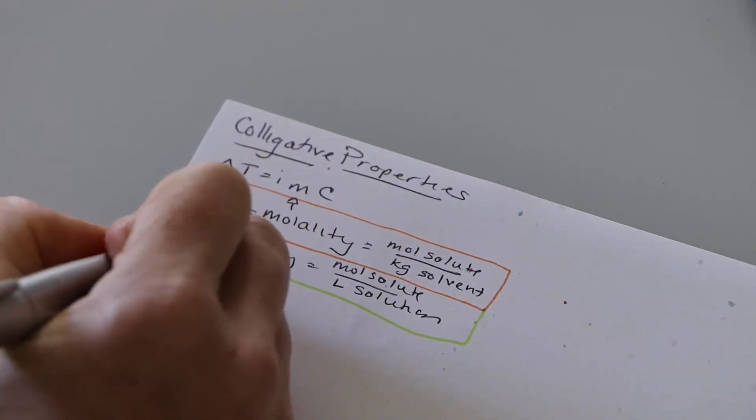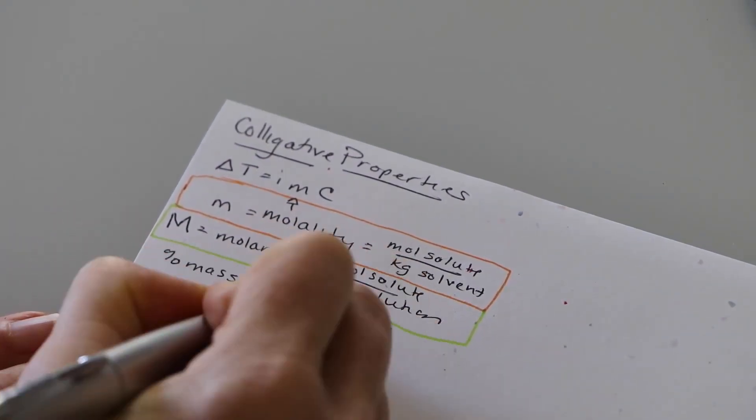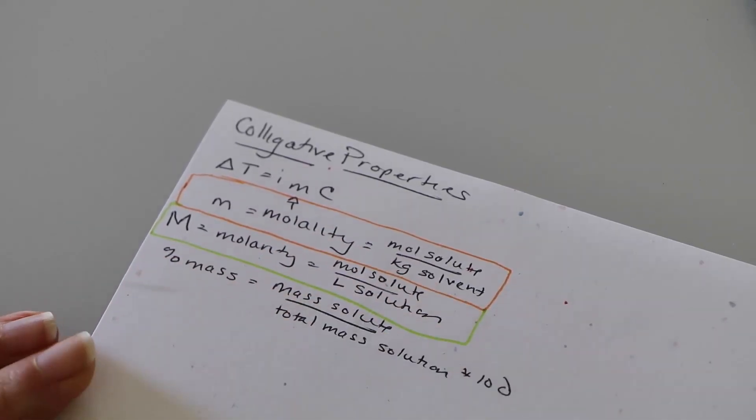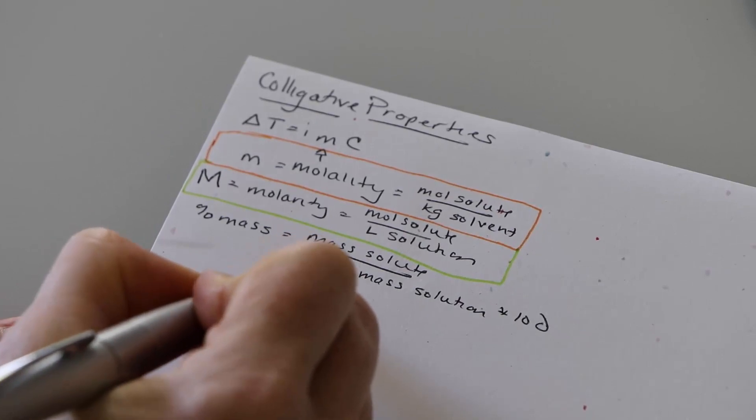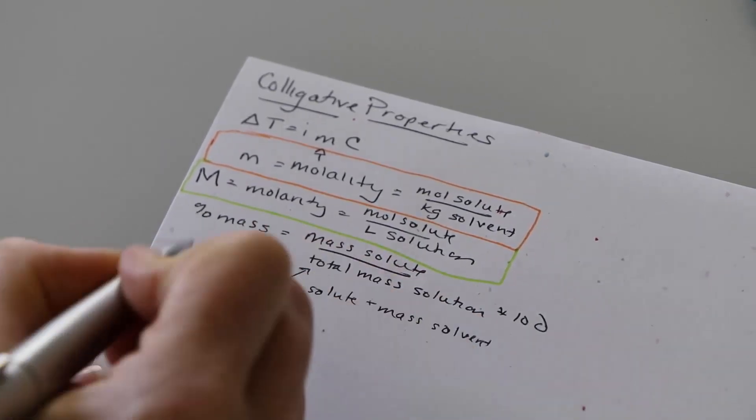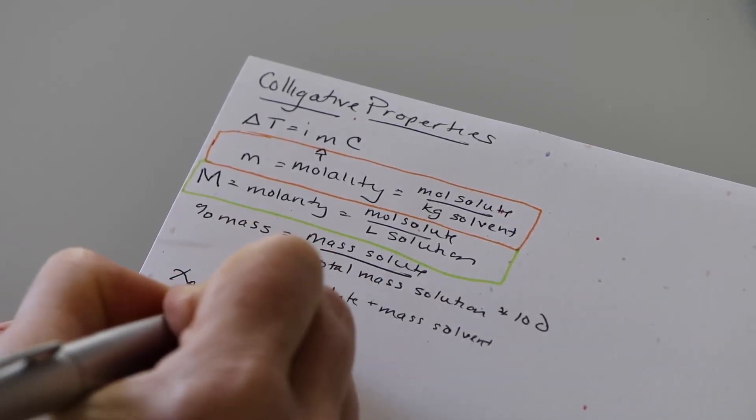I started trying to put colors in but it ended up being just too much. So I'm just going to write in black and every now and then highlight a few things. The percent mass concentration is the mass of the solute divided by the total mass of the solution times 100. The total mass of the solution is going to be the mass of the solute plus the mass of the solvent.